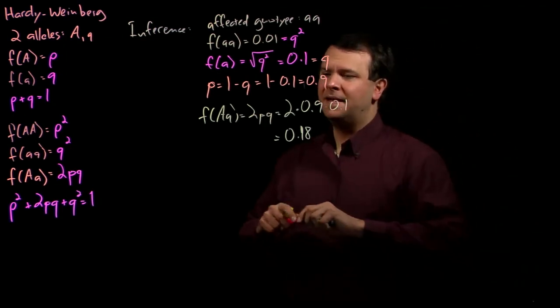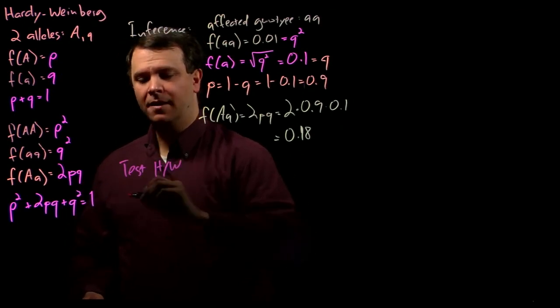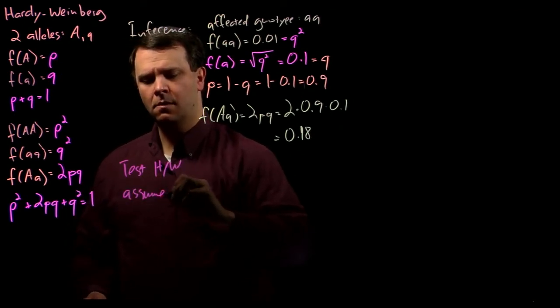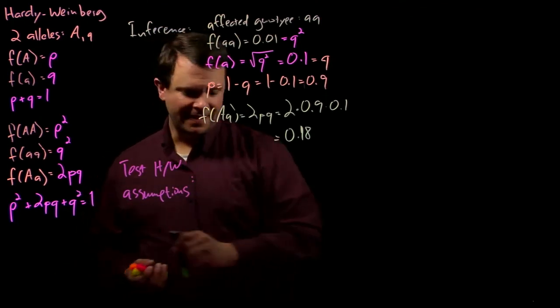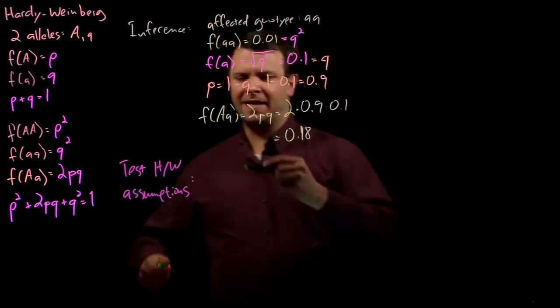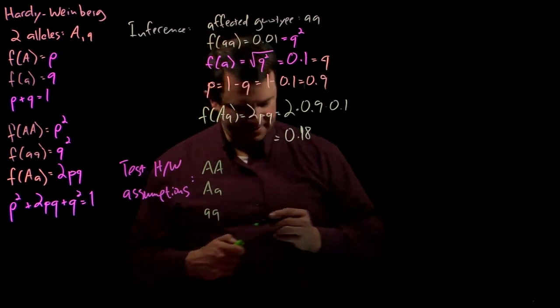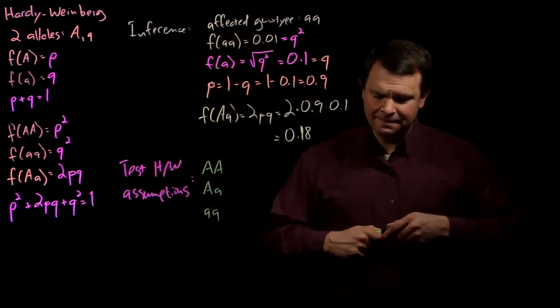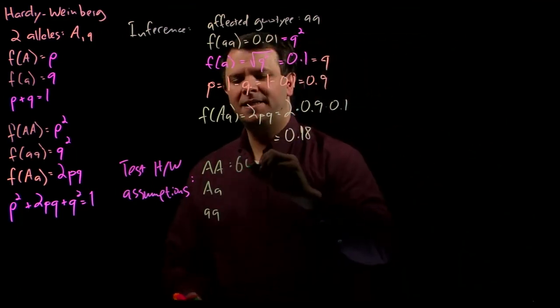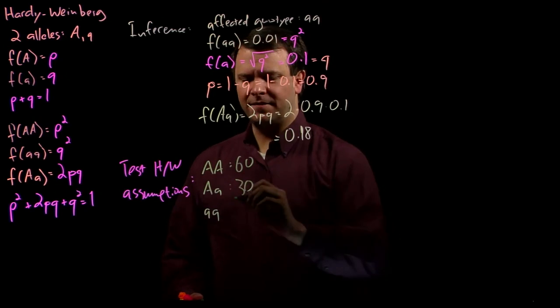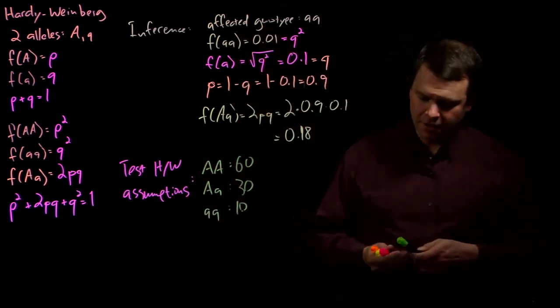And so, for example, we can test the Hardy-Weinberg assumptions. Let's say that I have three genotypes: big A big A, big A little a, and little a little a. And out of 100 individuals, I count 60 of them are big A big A, 30 of them are big A little a, and 10 of them are little a little a.